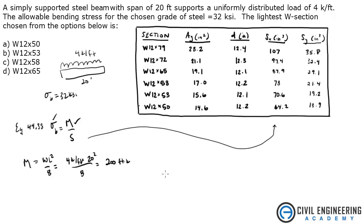So now we have M, so now we need to solve for S. S has to be greater than or equal to what we're solving for here, and that will give us the lightest W section that we can have. So S has to equal M over sigma B.